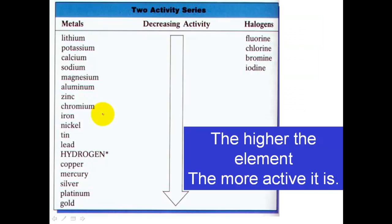This is an example of an activity series — I got this picture off the internet, but it illustrates exactly what an activity series is. The activity series separates the metals and the non-metals. On the left-hand side we have the metals: lithium, potassium, calcium, etc. On the right-hand side you'll see the halogens, also known as the non-metals. As I go down the column, both metals and non-metals have decreasing activity.